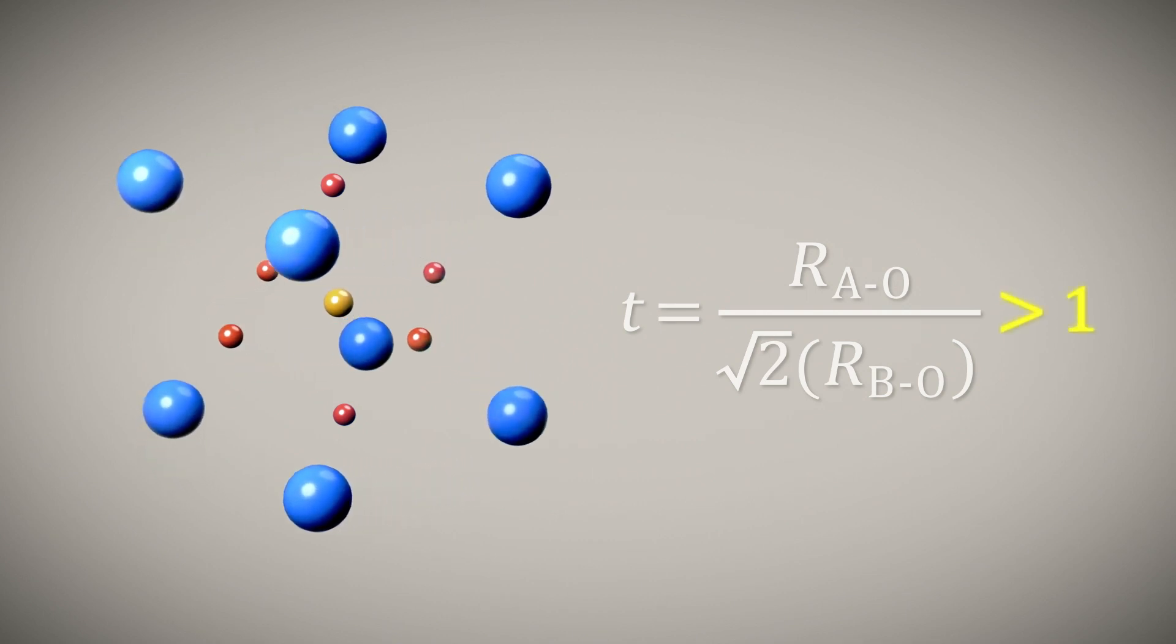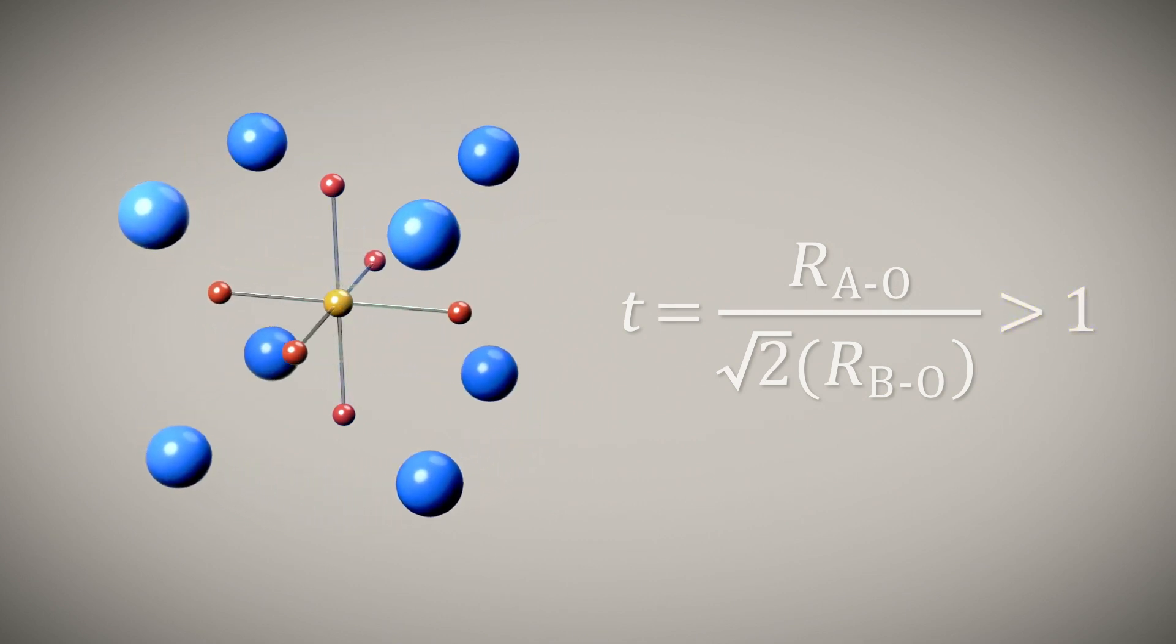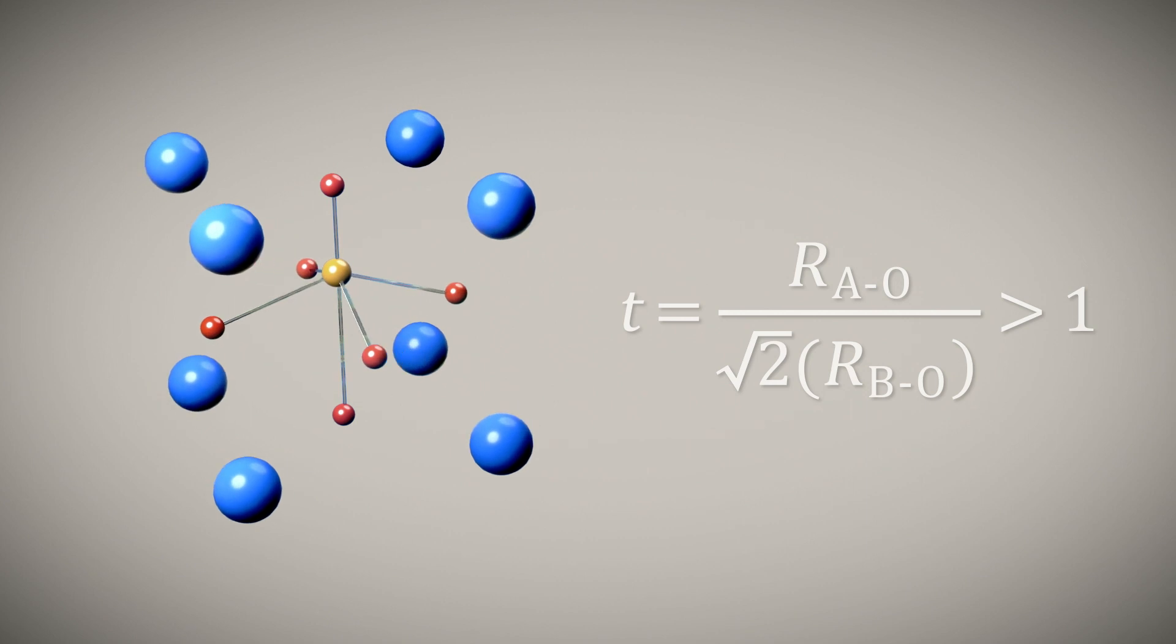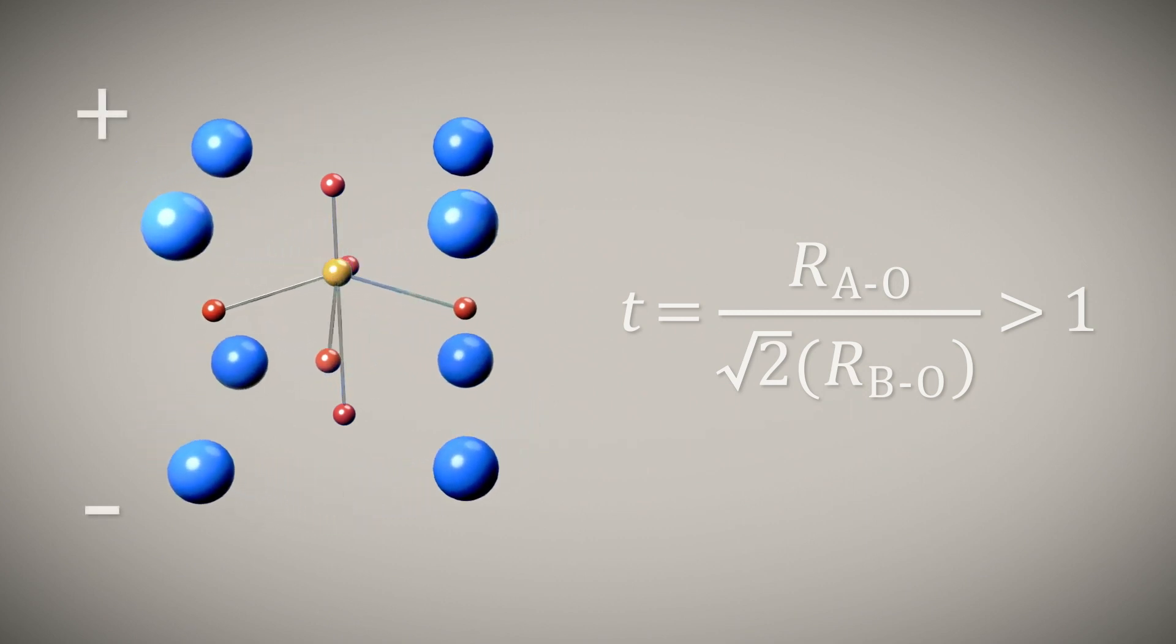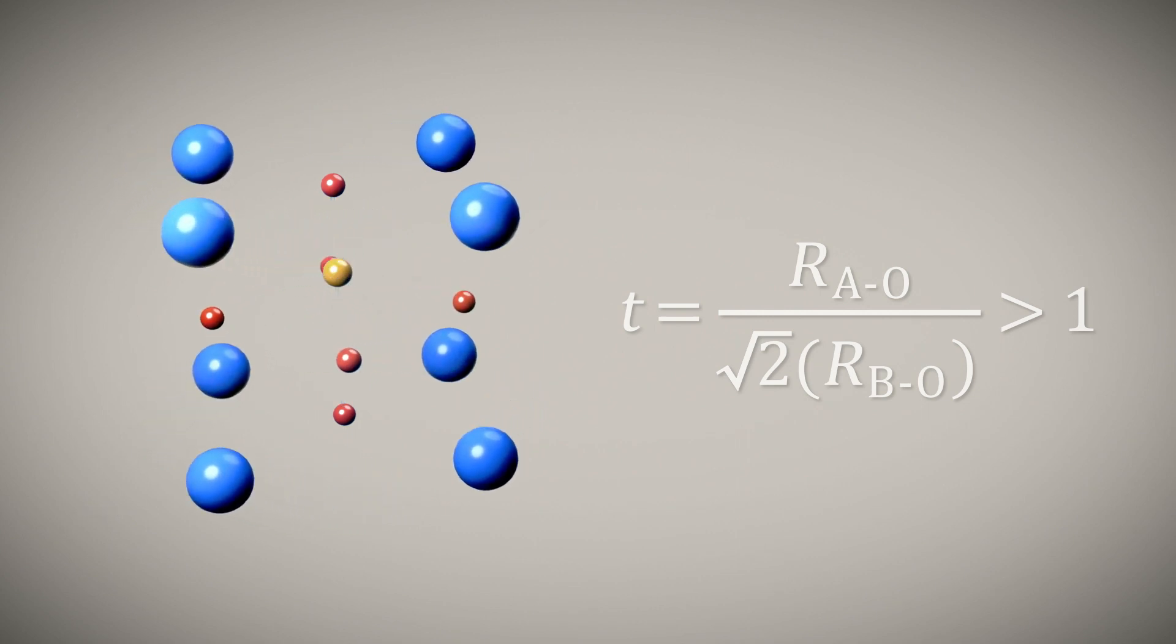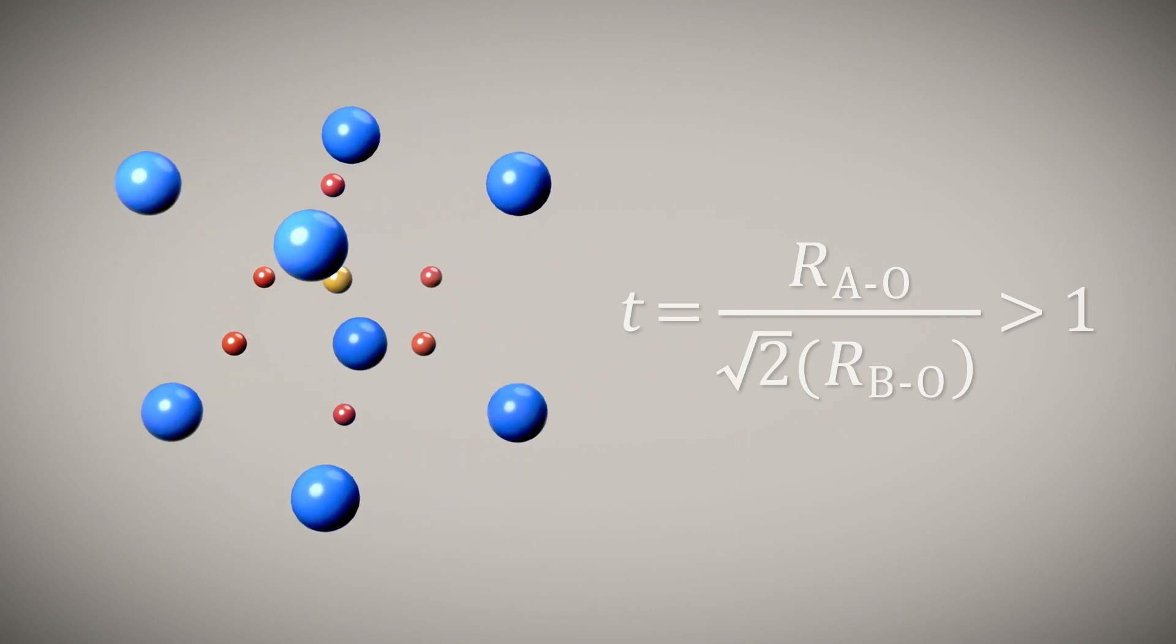When T is greater than 1, the B site is not optimally coordinated, and a polar or ferroelectric distortion is predicted to occur. This is what happens in prototypical ferroelectrics like barium titanate and lead titanate.